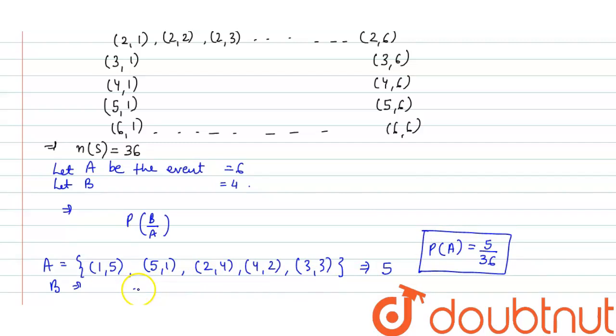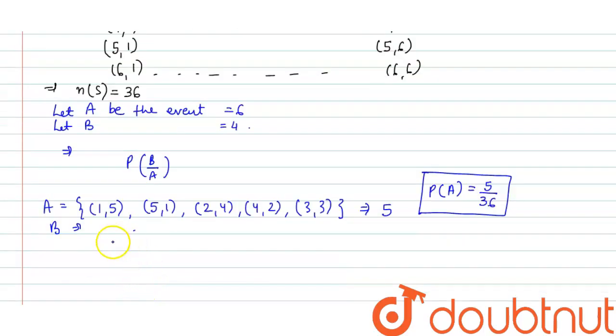Now, for second case, let B be the event of the number 4 has appeared at least once. We will use when 4 appears. So (1,4), (2,4), (3,4), (4,4), (4,5), (4,6). Again, reverse order (4,1), (4,2), (4,3), and (4,5) and last one is (4,6). Total cases.